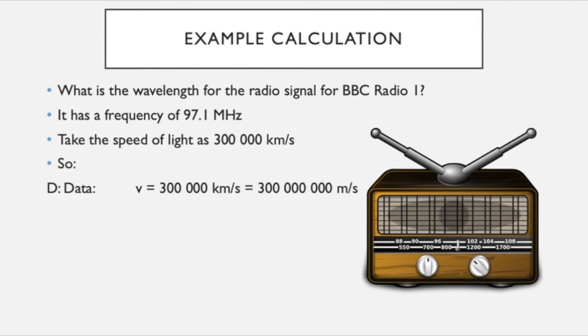So remember our DESRA. D for data, our data here is that the velocity, the speed of light, is 300,000 kilometers per second or 300 million meters per second, and we need to convert things into our standard units so we would use meters per second. And frequency is 97.1 megahertz. Mega means a million, so we've got 97 million 100,000 Hertz.